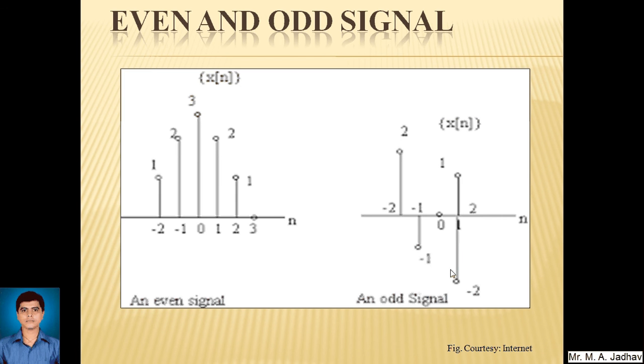This is the diagram for even and odd signals. This is for even signal and this is for odd signal. Odd signal is zero for x equals zero. We can see here x of t equals x of minus t in this case. And here x of t equals minus x of minus t. So these two are even and odd signals.